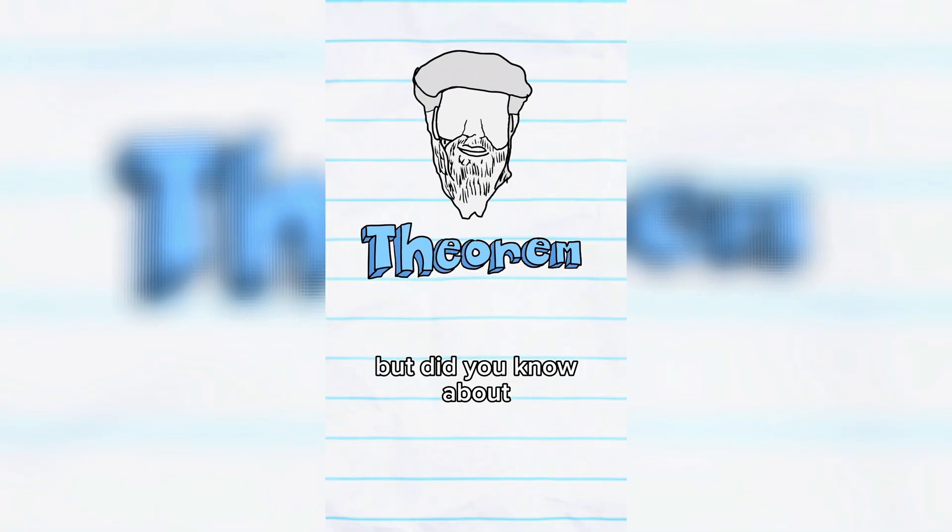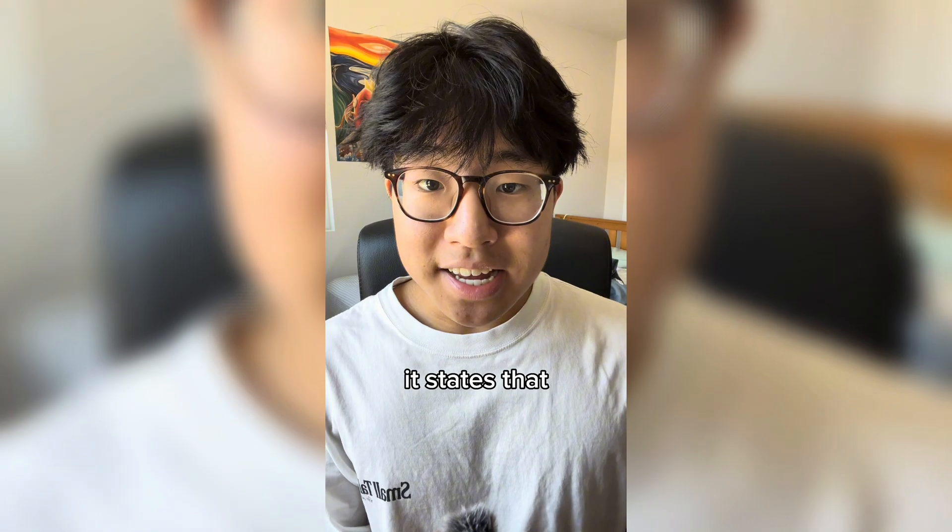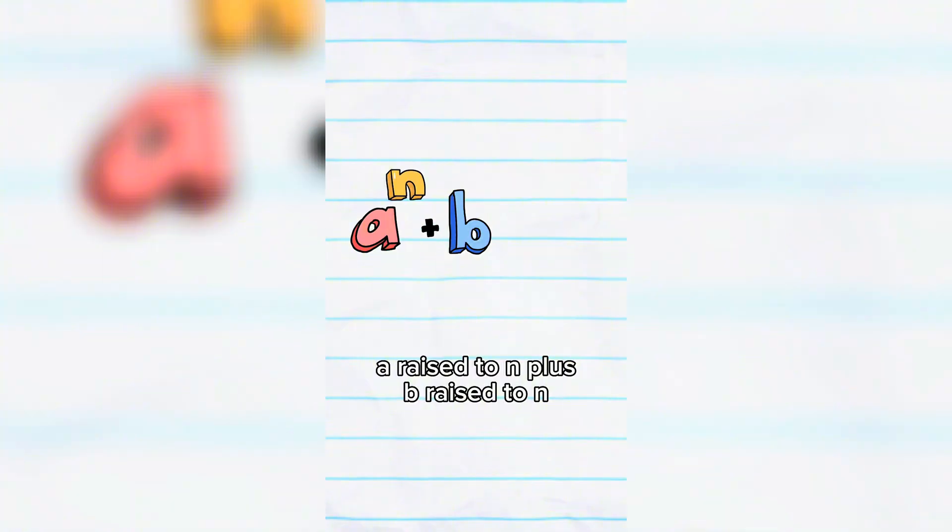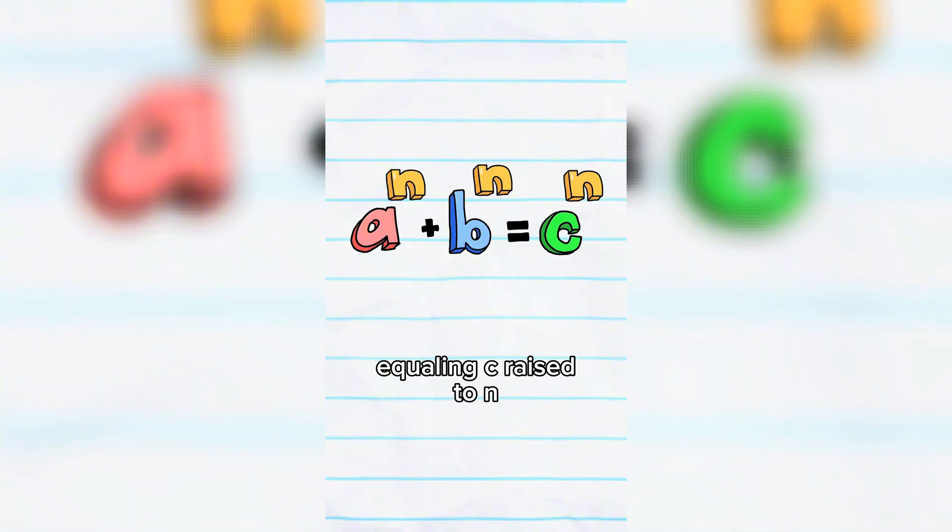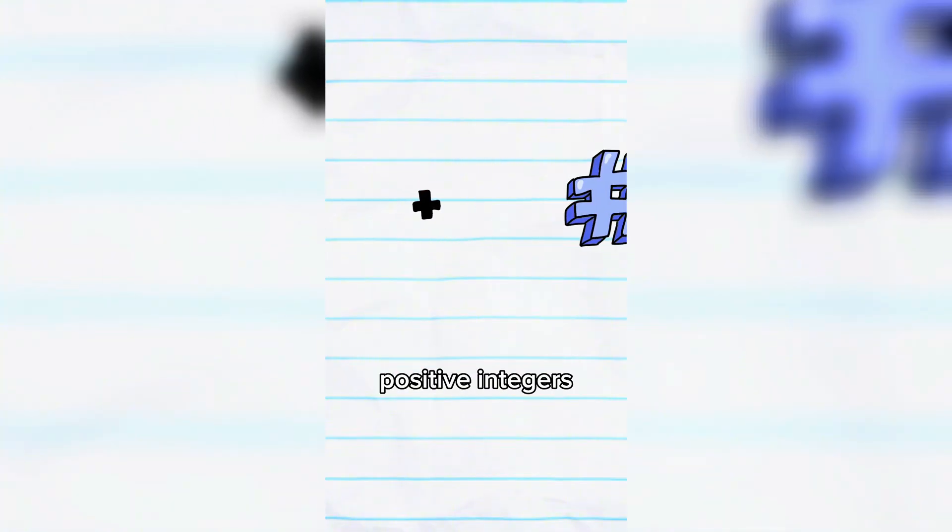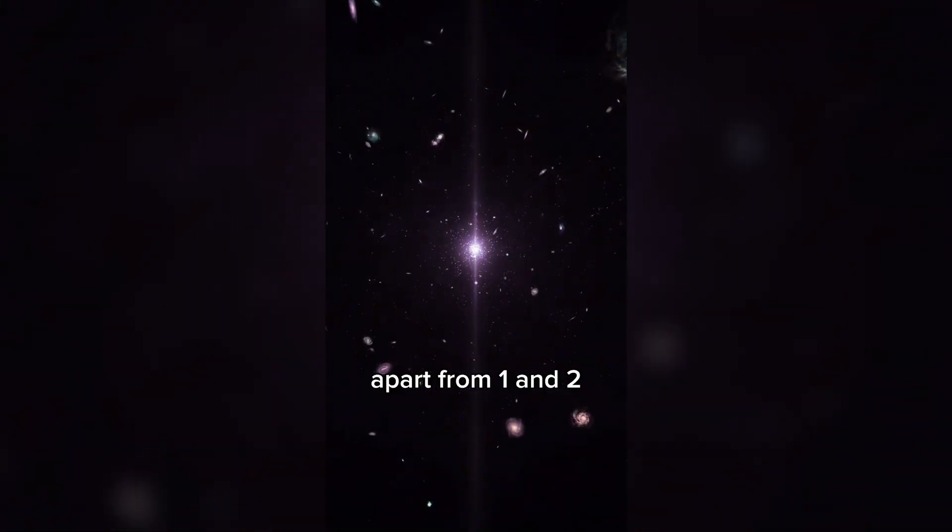Three math facts I bet you didn't know. You may know about the Pythagorean theorem, but did you know about Fermat's last theorem? It states that A raised to N plus B raised to N equaling C raised to N, where A, B, C are all positive integers greater than 2, does not work with any numbers in the entire universe apart from 1 and 2.